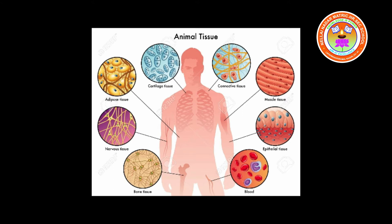The types of tissue are simple tissue and complex tissue. In simple tissue, a group of cells that are similar in origin, form, structure, and work together to perform a specific function. Complex tissue is a group of cells different in structure and function but coordinate to perform a specific function.